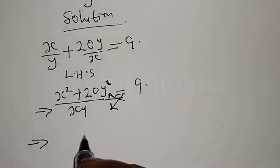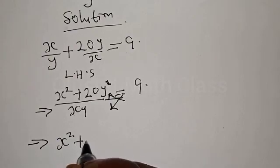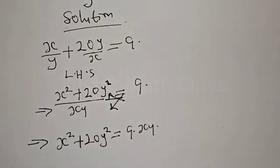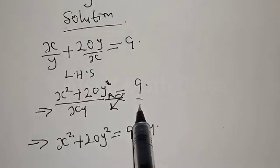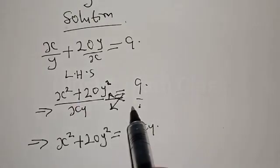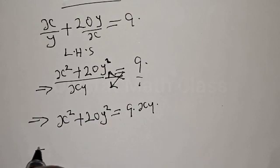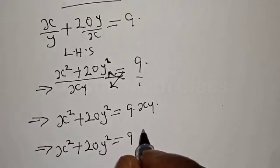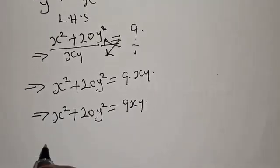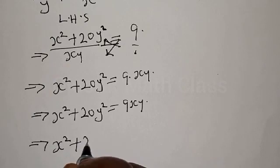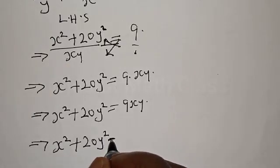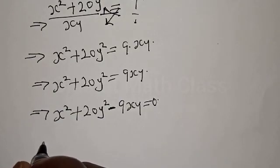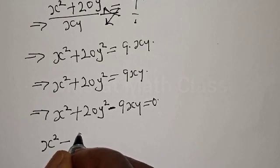Now let's cross multiply. This implies that we have x squared plus 20y squared equal to 9 multiplied by xy, because 9 is 9 over 1. Multiplying through gives x squared plus 20y squared equal to 9xy. This implies x squared plus 20y squared minus 9xy equal to zero.